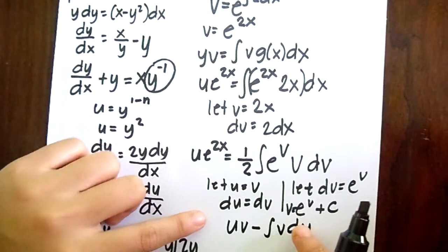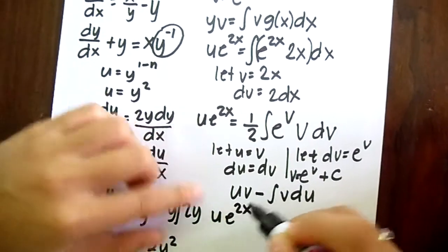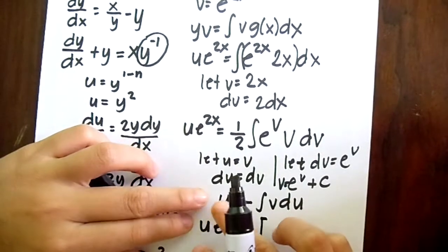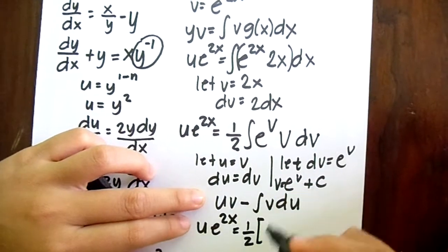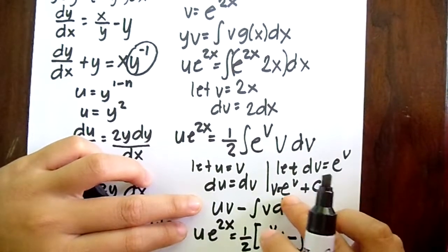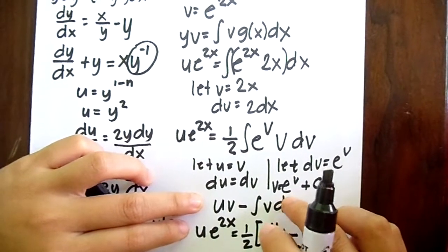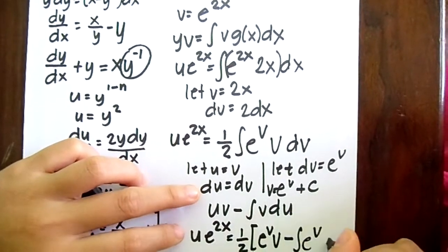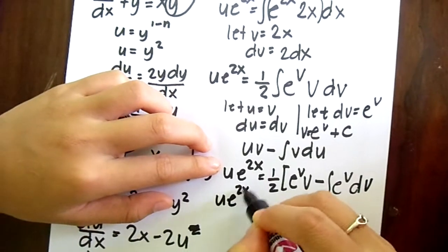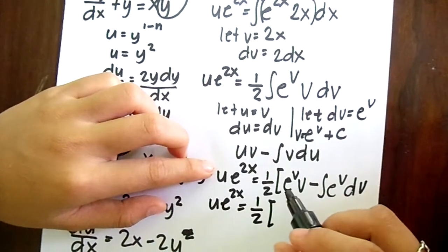We'll now substitute it to here, and we have u e to the 2x equals 1 half, uv, which is v times e to the v, minus integral of v du, our v here is e to the v, and our du is dv. So it becomes u e to the 2x equals 1 half v e to the v minus integral of e to the v dv.